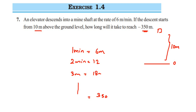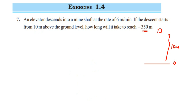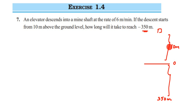Now we have to find the time. Looking at the picture, the elevator has to reach 350 meters below the ground level. To find the total distance: the elevator is 10 meters above the ground and needs to go 350 meters below the ground, so the total distance is 10 plus 350, which equals 360 meters.